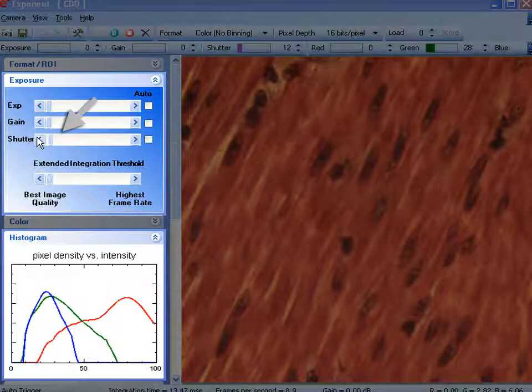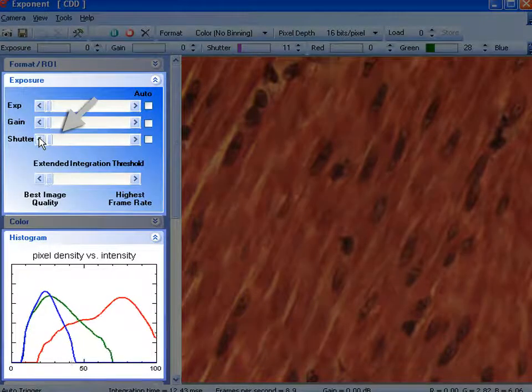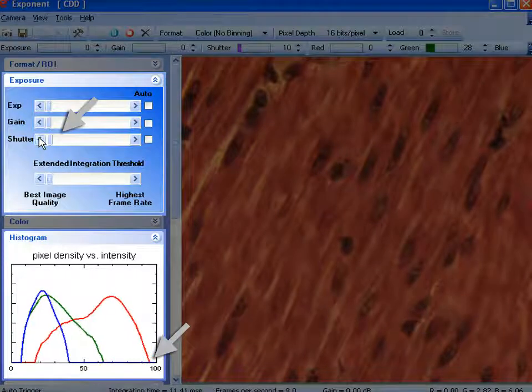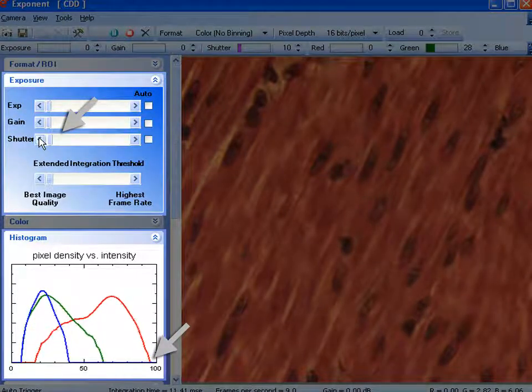Set exposure, here named shutter, until all values are within the dynamic range. You can also use an auto function for the first image.